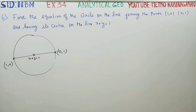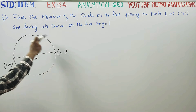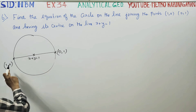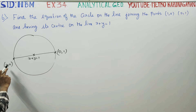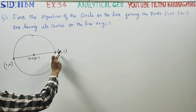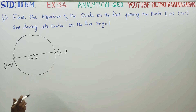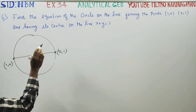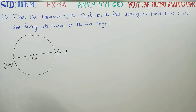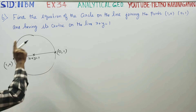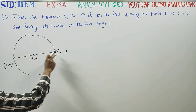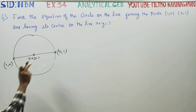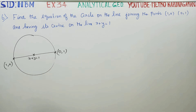The circle passes through the two points (1,0) and (0,1). The center lies on x plus y is equal to 1. Find the equation of the circle on the line joining points (1,0) and (0,1) having its centre on the line x plus y is equal to 1.